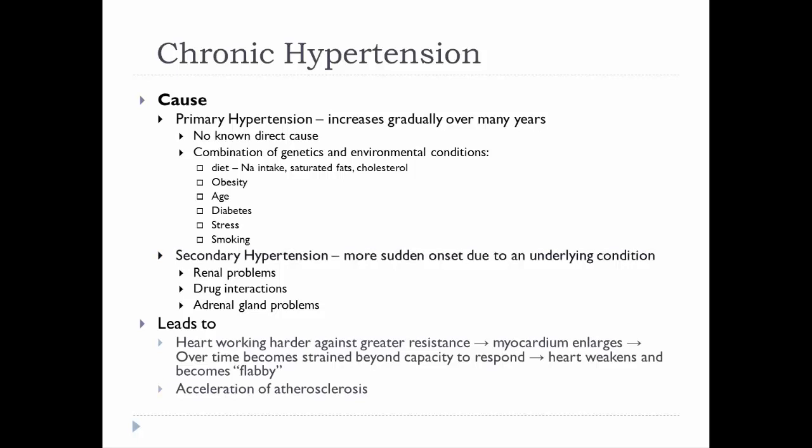Secondary hypertension is often quicker to set in, and it's usually because there is some underlying condition that results in it, such as renal problems where the kidney can't regulate blood pressure, drug interactions that have hypertension as a side effect, or adrenal gland problems causing too much norepinephrine. The initial underlying problem results in the hypertension.